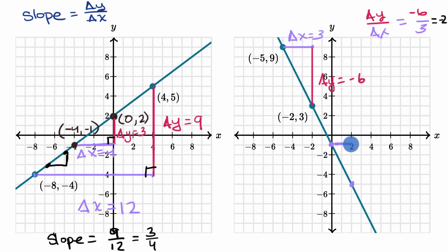So here, our change in x, change in x, we're going two in the positive x direction is two. And then our change in y, we're going down again.